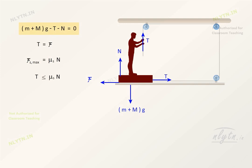Using N from this equation, we get T should be less than or equal to μₛ into (m + M)g - T.